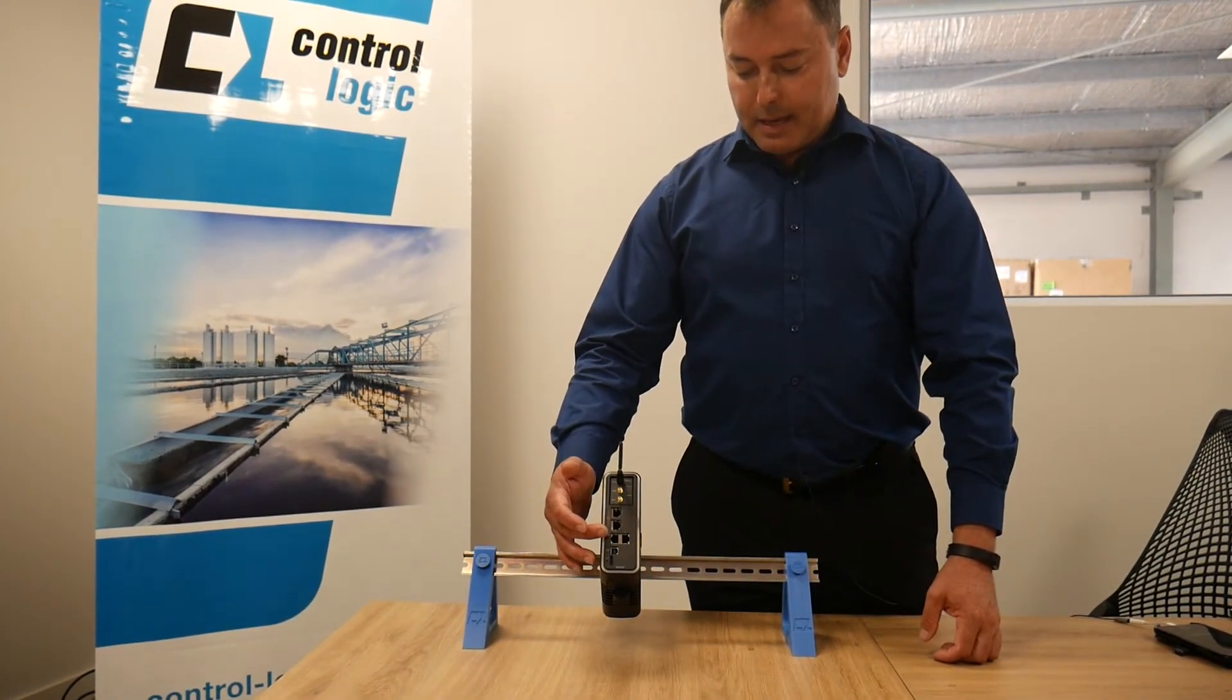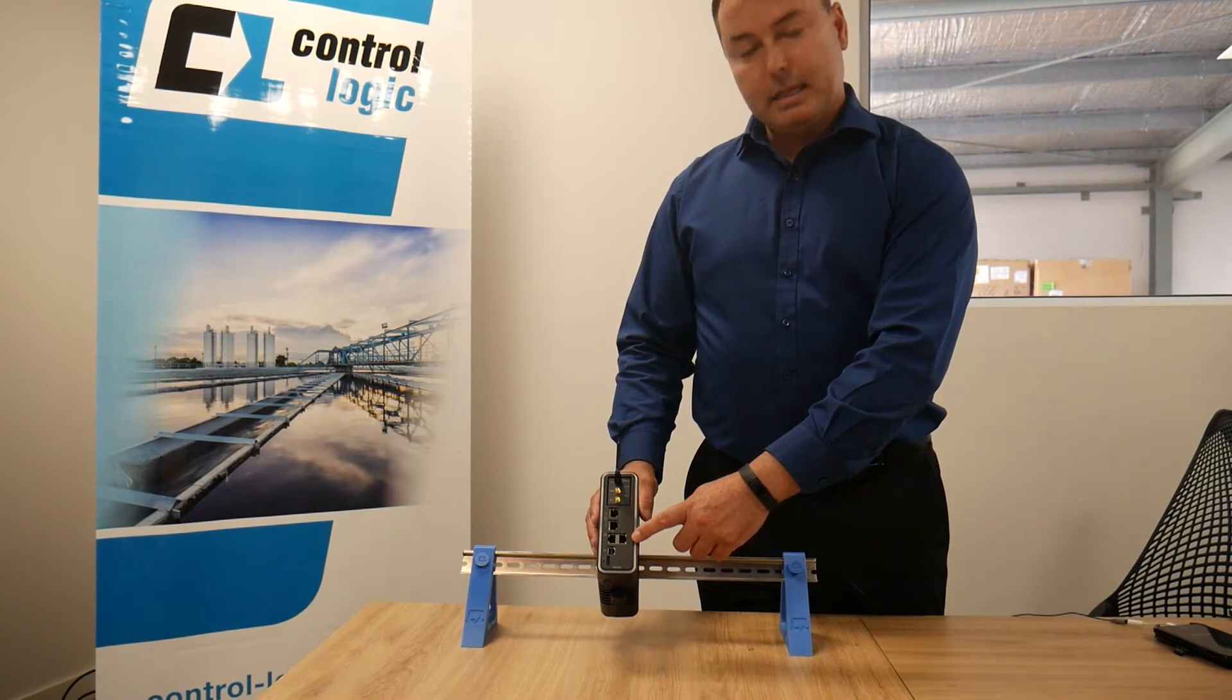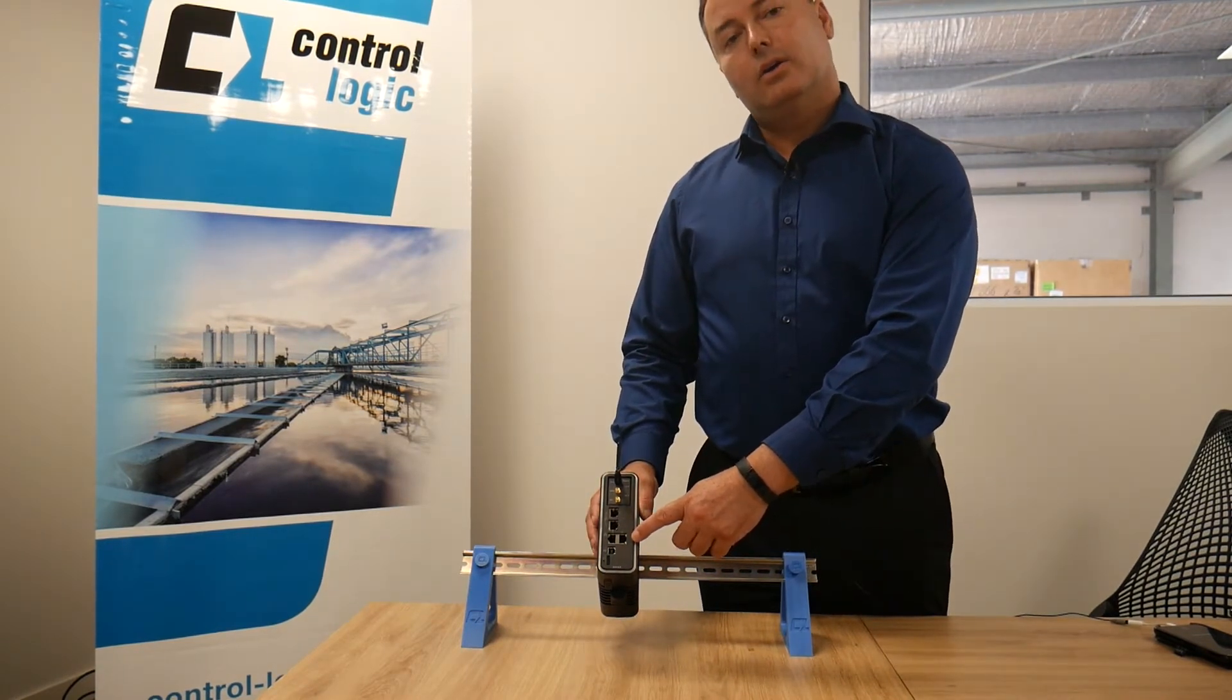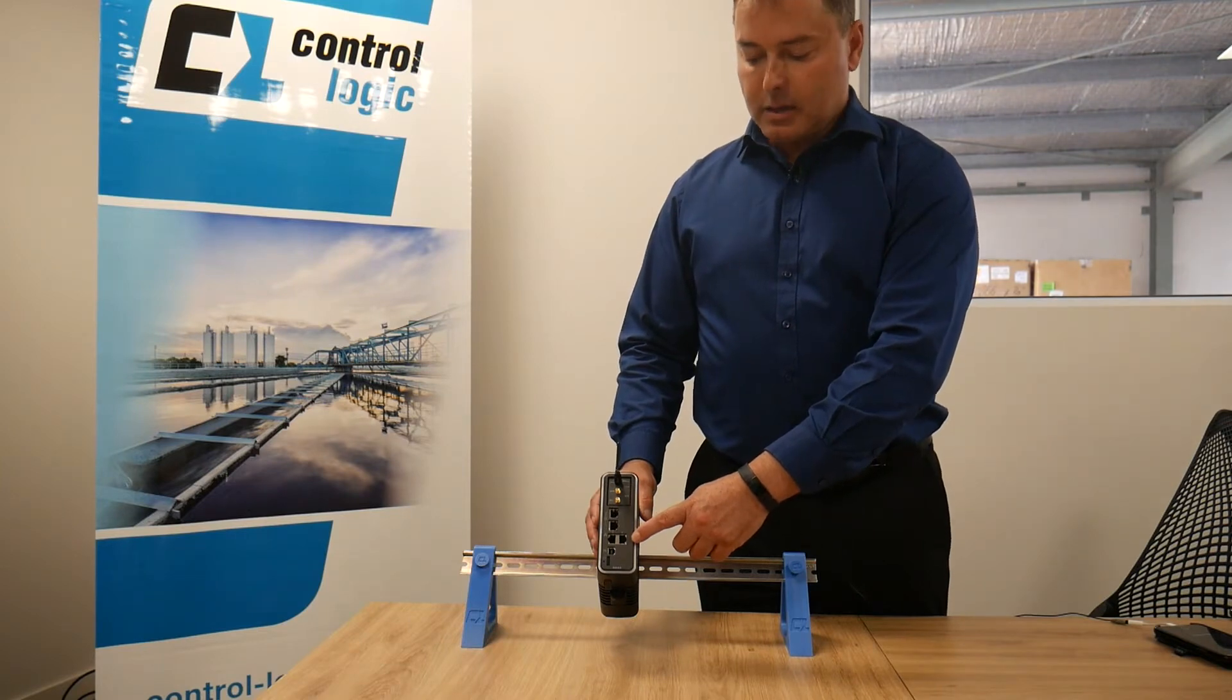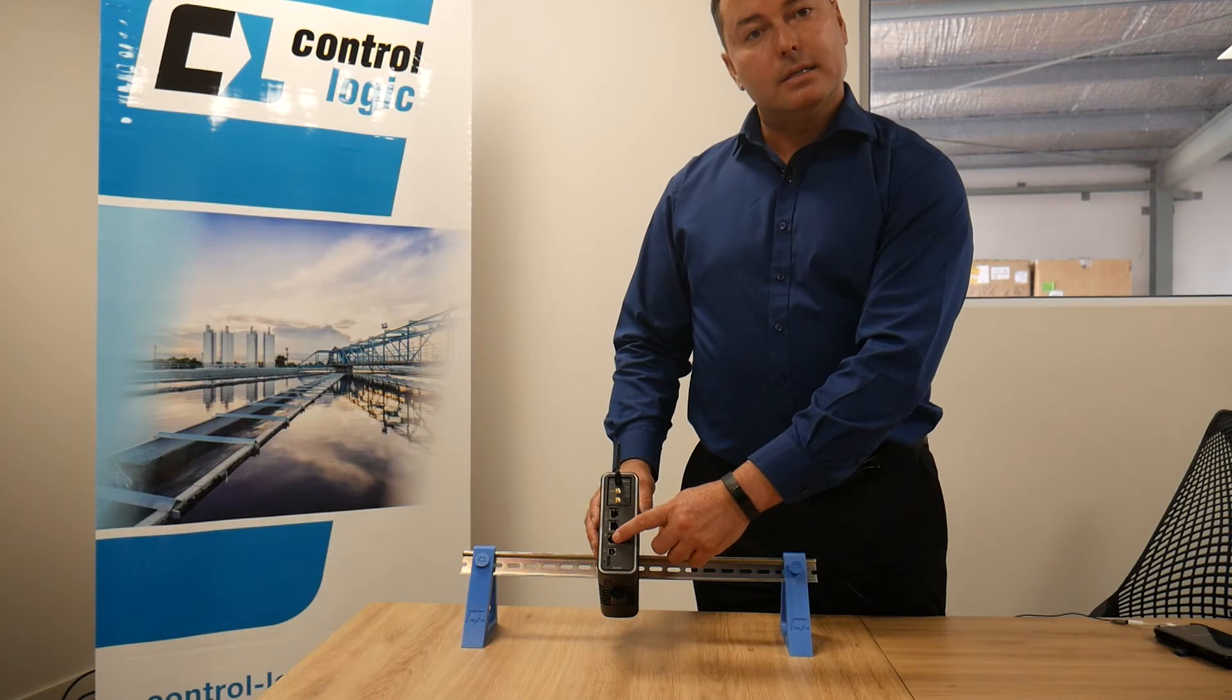Above that we have two Ethernet ports. These ports can operate on two different subnet masks and are usually used one for the control network and one for the SCADA network.